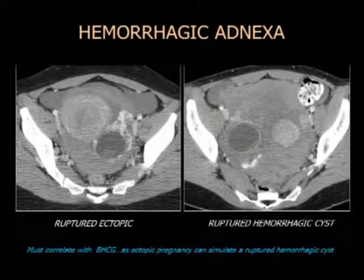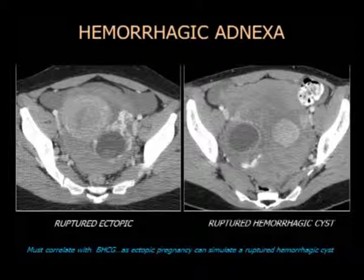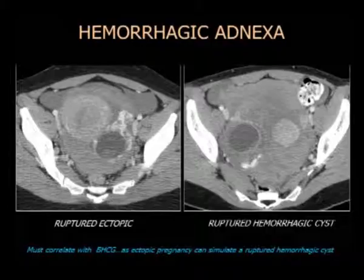Recuerden esto: era una paciente con ruptura de un ectópico confirmada en el quirófano. Es fundamental tener un beta negativo al momento de examinar — esta mujer de 43 años juró que no estaba ni estaría jamás embarazada.